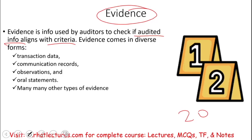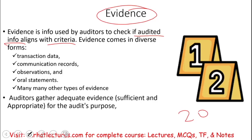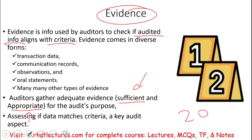As a student, you need to evaluate which data fits a given scenario and which data has more credibility, because not all evidence is equal. Certain evidence will carry more weight than others. Auditors gather what we call sufficient and appropriate evidence — we'll have a whole session explaining that. For now, just know it means acceptable and adequate evidence for audit purposes, and we need to assess if the data matches the criteria.